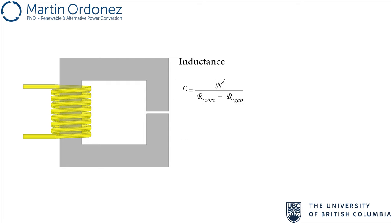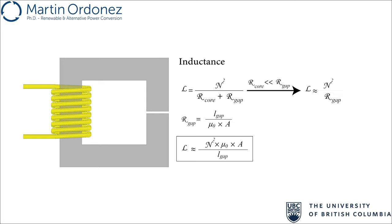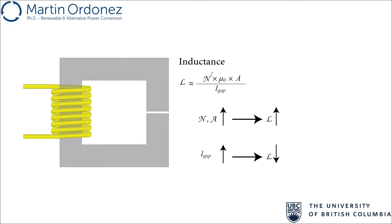For practical purposes, we may neglect the core reluctance and only consider the air gap reluctance. This is a good approximation as long as the permeability of the core multiplied by the air gap length is much larger than the core length. Ignoring core reluctance, we simplify the inductance relationship. Replacing the air gap reluctance with its equivalent term, we get the inductance equation. Increasing the number of turns and cross-sectional area increases inductance, while increasing air gap length reduces it.